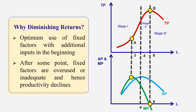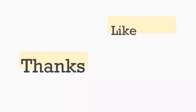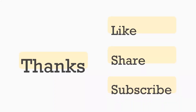So we have three stages of production: stage one is increasing returns, stage two is decreasing returns, and stage three shows negative returns. If you find this video useful, kindly like, share, and subscribe to our YouTube channel. Thank you.